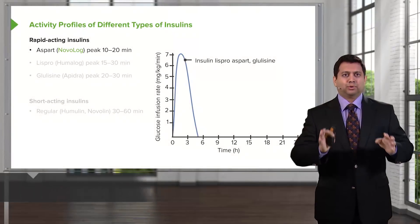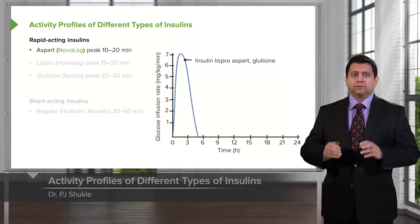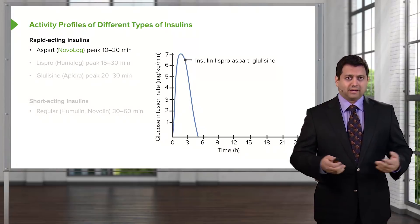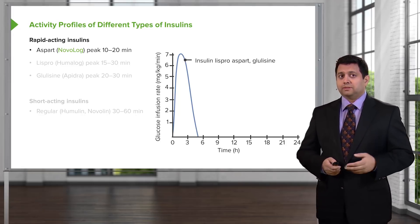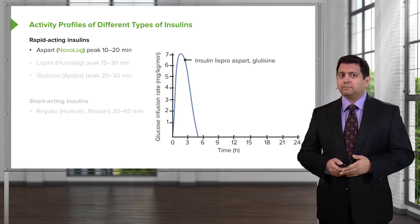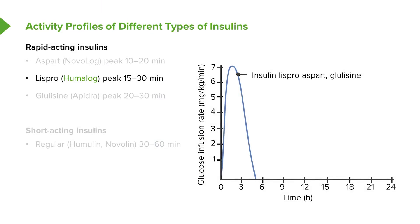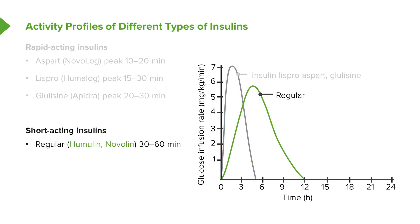Let's take a look at the profiles of the different types of insulins on the market today. The rapid-acting insulins, sometimes called the ultra-rapid-acting insulins, are usually given at mealtime. There are three different major groups: aspart insulin that peaks at 10 to 20 minutes, lispro insulin that peaks at 15 to 30 minutes, and glulisine insulin that peaks at about 20 to 30 minutes. The short-acting insulins take a little bit longer — these are the oldest of the insulins and we call them regular insulins. Trade names include Humulin and Novolin. They peak at around 30 to 60 minutes and last up to 4 to 12 hours.